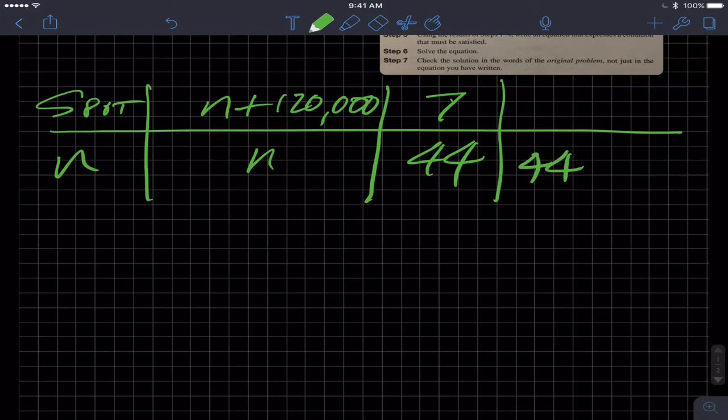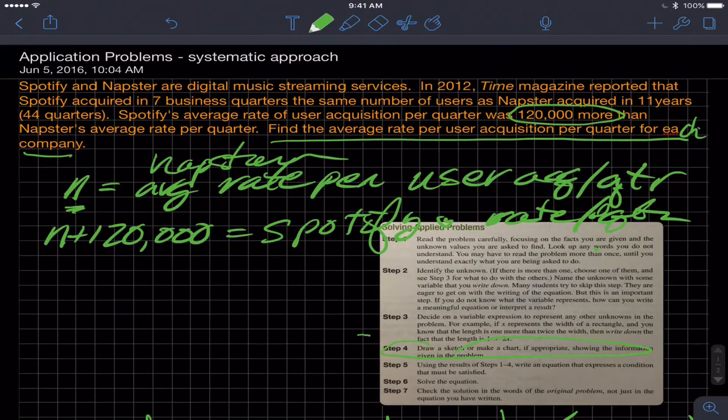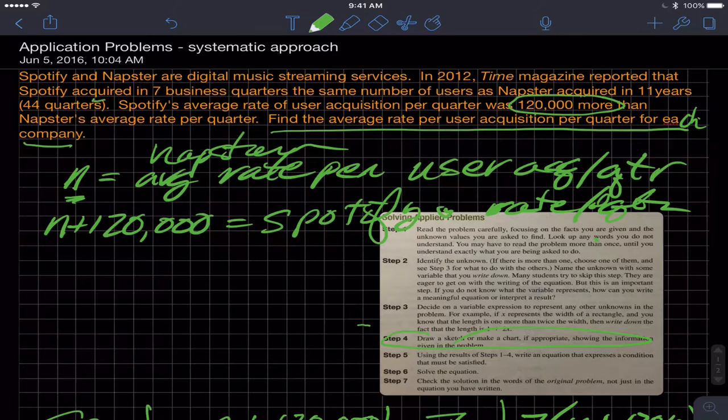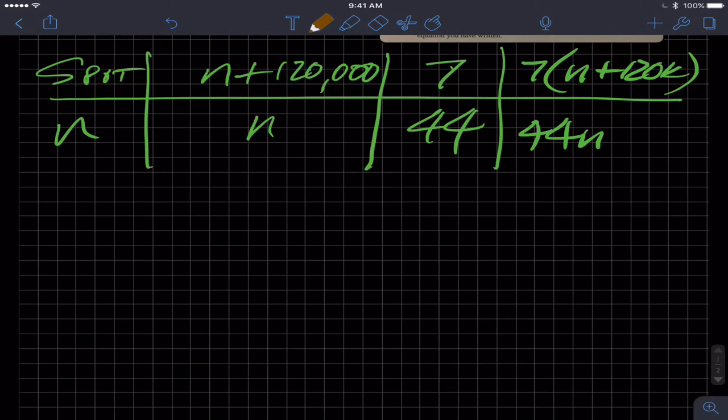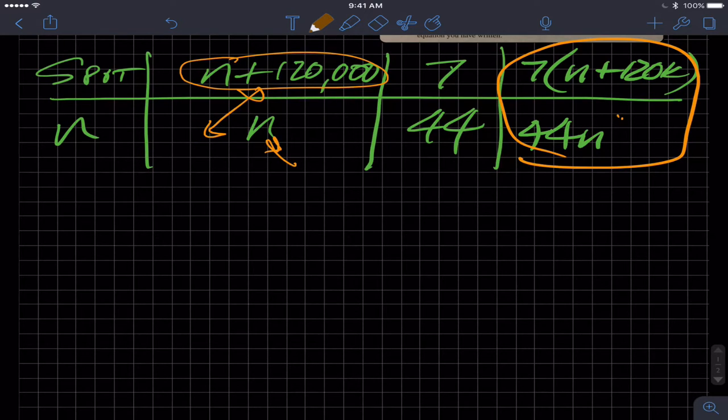This becomes 44n and then this is seven times n plus 120k. Back in the problem they state that Time magazine reported that Spotify acquired in seven business quarters the same number of users. So really they're saying that these two values are equivalent or the same, so that becomes the relationship that we need. To do any math problems you need to have relationships: how does something relate to another? That's a key point. How do we relate this or define this in terms of that or vice versa? Now that we have this equation or relationship, we can make an equation.